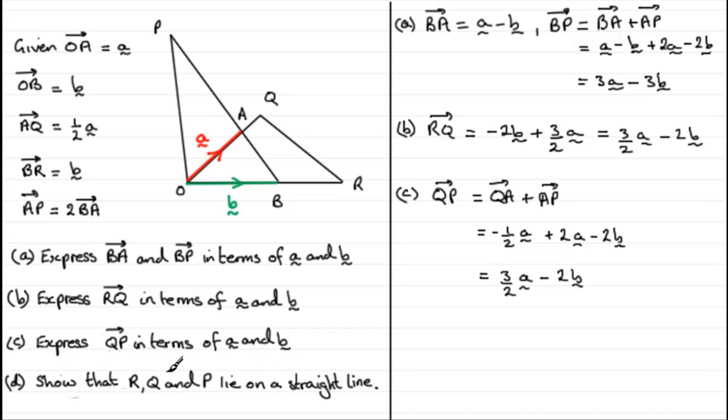Now we get to this interesting part D. Show that R, Q and P lie in a straight line, or as some people say that they're collinear. Now we already know what RQ is. We can see that it is 3 over 2a minus 2b. And we know that QP, we've just found it, is also 3 over 2a minus 2b. So both these vectors are exactly the same. RQ is exactly the same as QP.